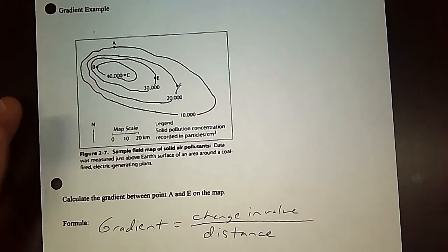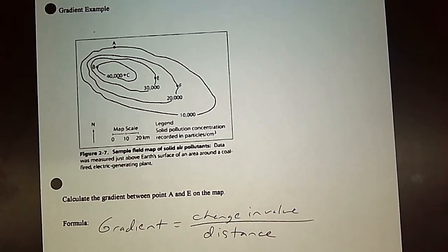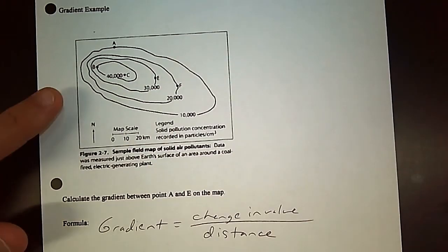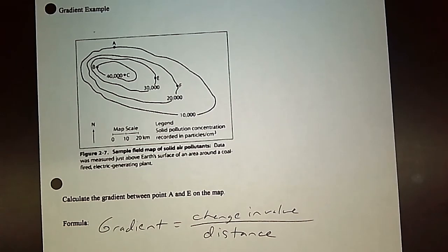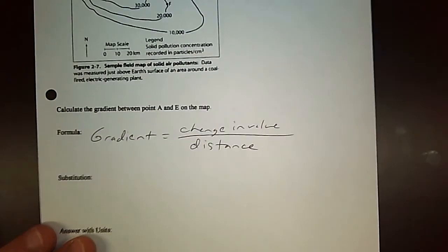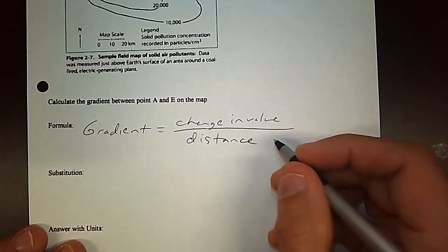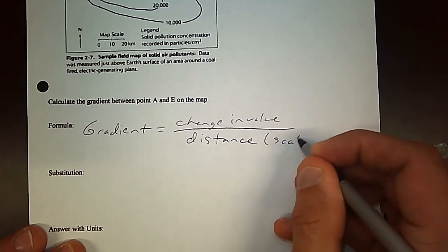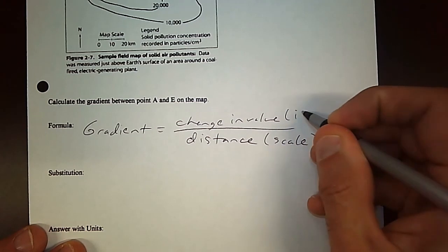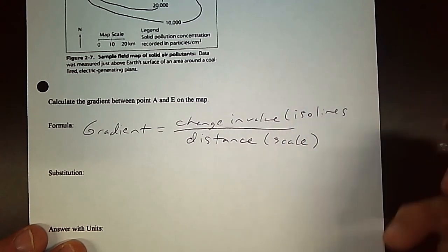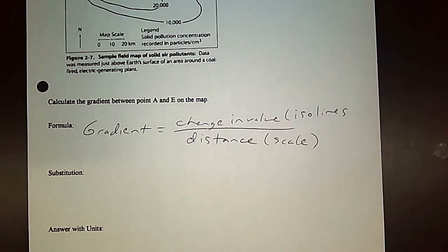When you deal with this, the change in value is going to be whatever the ISO lines are measuring, and then the actual distance depends on the scale. So remember scale, and these are the ISO lines. When you're dealing with the examples or trying to figure out or calculate one of these, you have to keep that in mind.